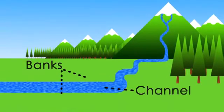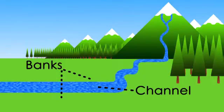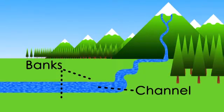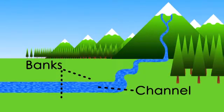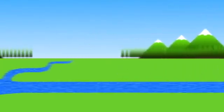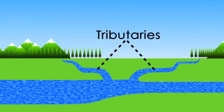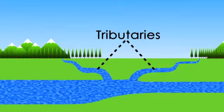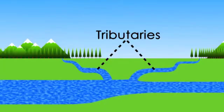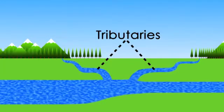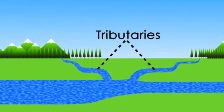A river flows between its sides or banks in what's called a channel. The channel increases its size as the river gains water from other smaller streams or tributaries.